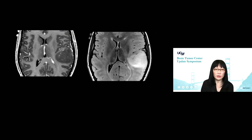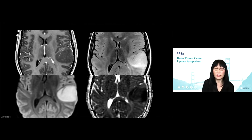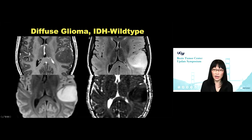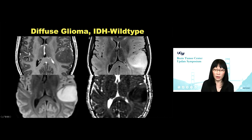How about this young lady? She was thought to have a stroke because DWI and ADC maps showed very homogeneously reduced diffusion. But in fact, this is a diffuse glioma IDH wild type. And whenever we see a non-enhancing mass that looks like glioma, we go and look for DWI and ADC map. If indeed this non-enhancing mass is reduced, this is a telltale sign of most likely a highly aggressive malignant glioma.